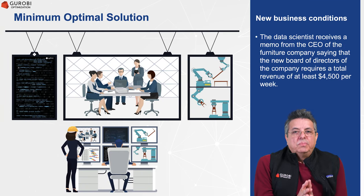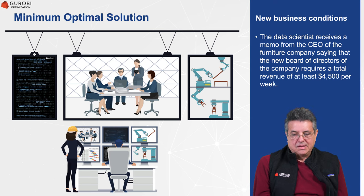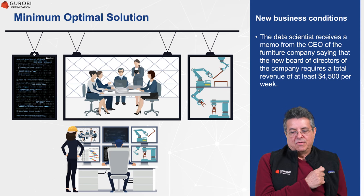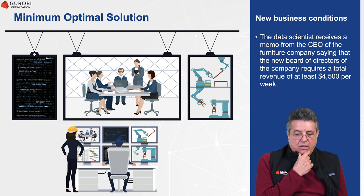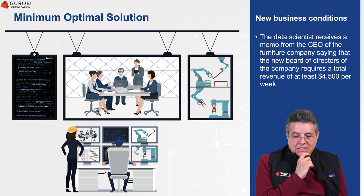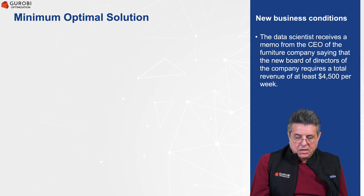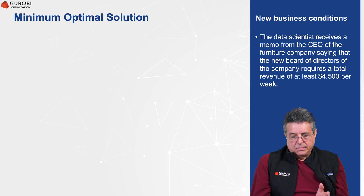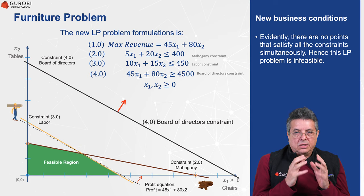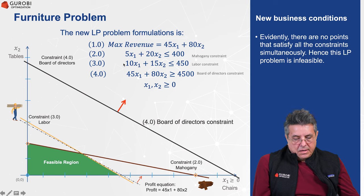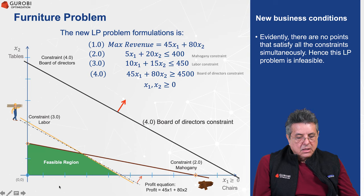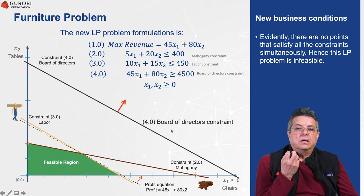The new business condition is that our data scientist receives a memo from the CEO of the furniture company saying that the new board of directors requires that at least a revenue of $4,500 per week needs to be generated. Let's see what this new constraint means geometrically.